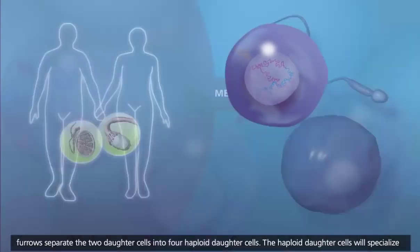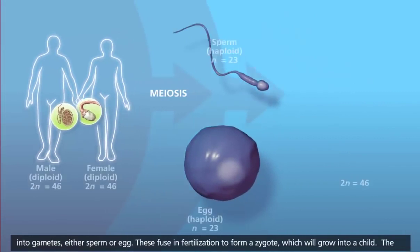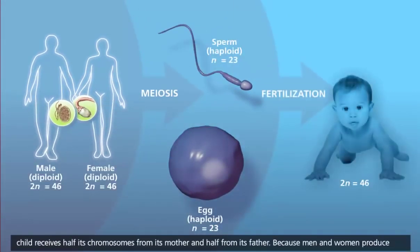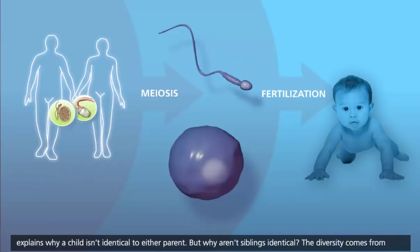The haploid daughter cells will specialize into gametes, either sperm or egg. These fuse in fertilization to form a zygote, which will grow into a child. The child receives half its chromosomes from its mother and half from its father. Because men and women produce millions of gametes and the selection of gametes in fertilization is random, this contributes to genetic diversity and explains why a child isn't identical to either parent.